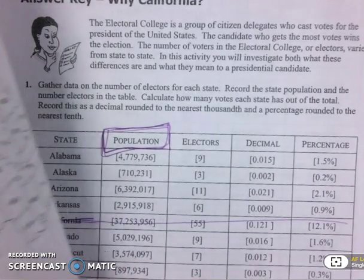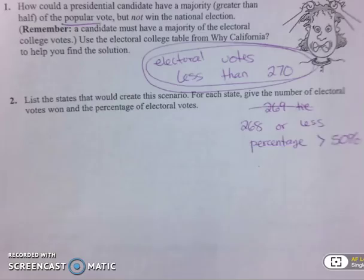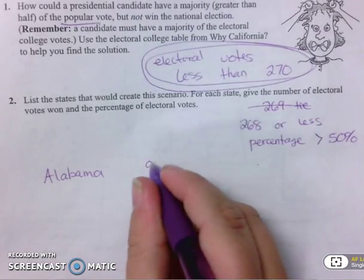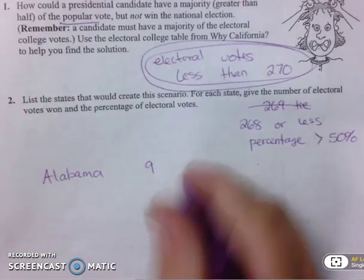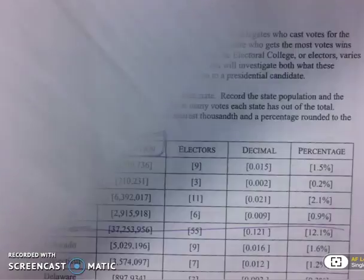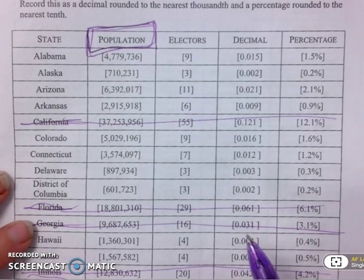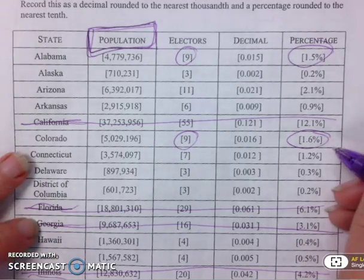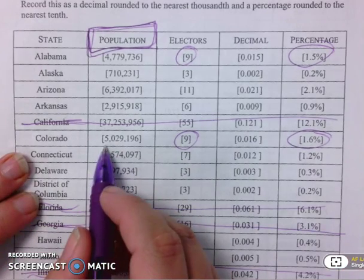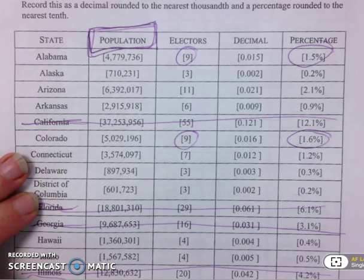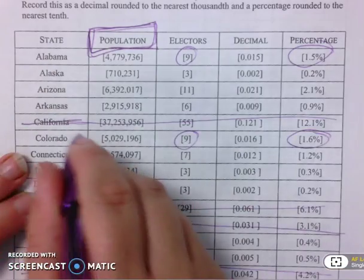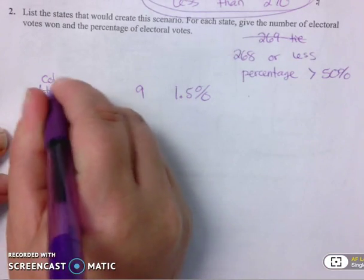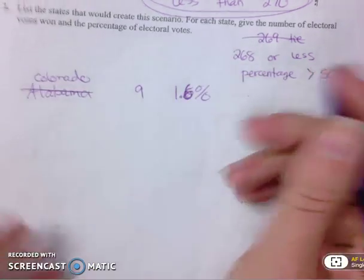You can research this to get an idea of what states to choose. Take Alabama for example — you write the state name first, then the number of electors is nine in Alabama, and the percent of the votes is 1.5%. But look through the table for states with the same electoral vote count: Colorado also has nine electors but a slightly higher population — 5 million versus 4.7 million — so I'm going to change it to Colorado for 1.6% instead.